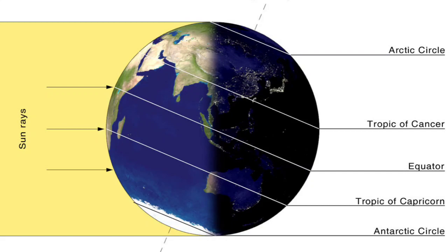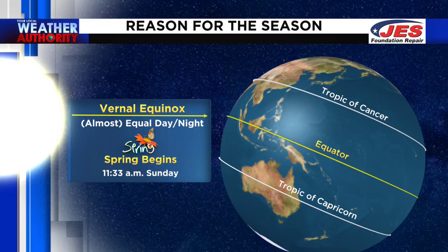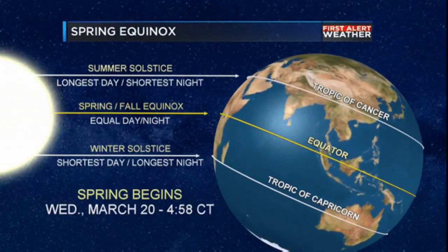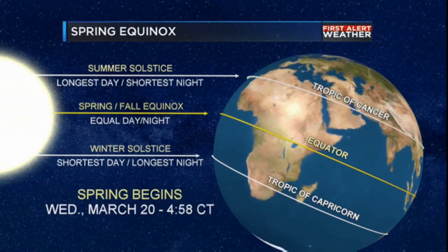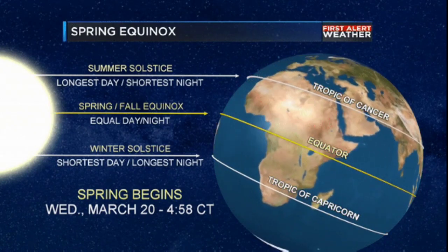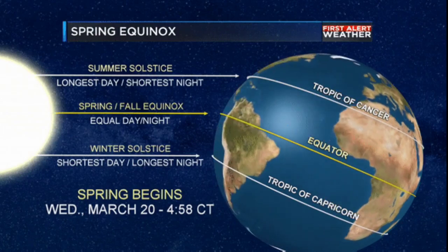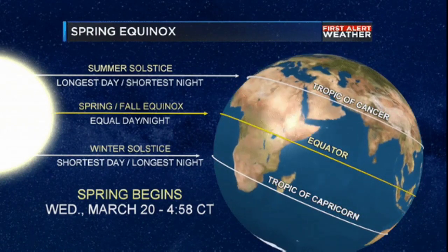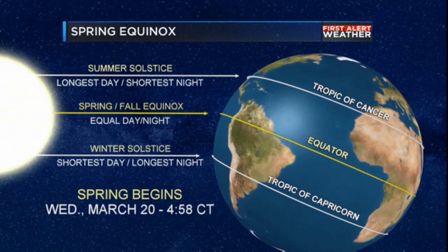In its revolution around the sun, the sun's rays fall vertically on the equator on 21st March and 23rd September, and are vertical on the Tropic of Cancer on 21st June and on the Tropic of Capricorn on 22nd December. When the sun's rays fall vertically on the equator, there is equal duration of day and night everywhere on the earth — that is, 12 hours of day and 12 hours of night — and this is called equinox. 21st March and 23rd September are known as equinox.